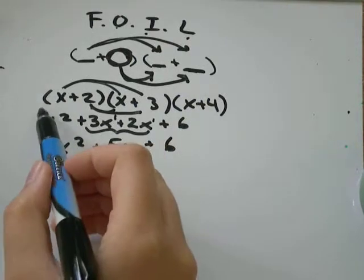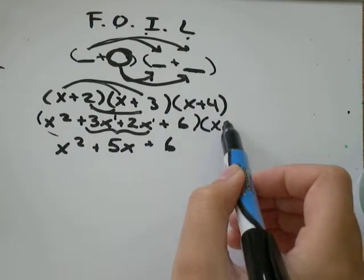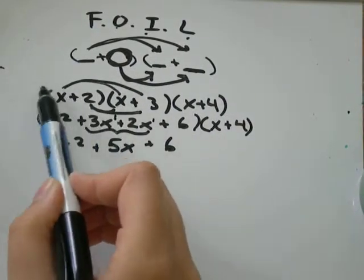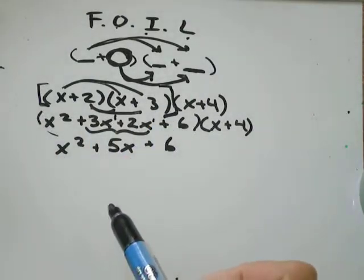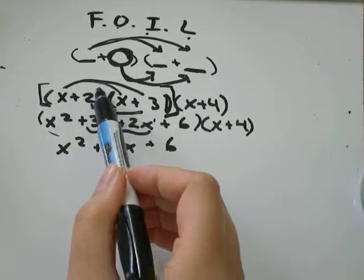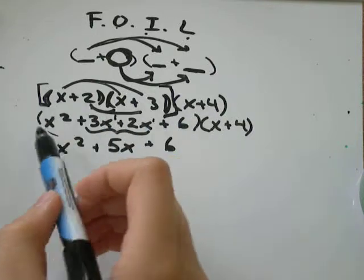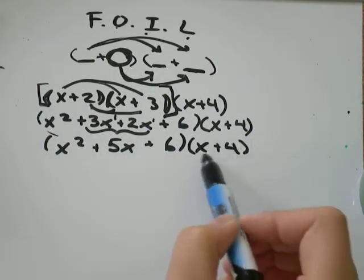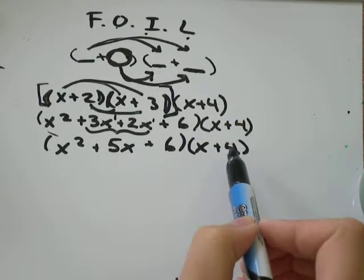Now, what I would suggest is you do work with just two brackets at a time. So this one here, and this one. Figure out what that is, which we found down here. And then worry about foiling with the third thing in brackets.